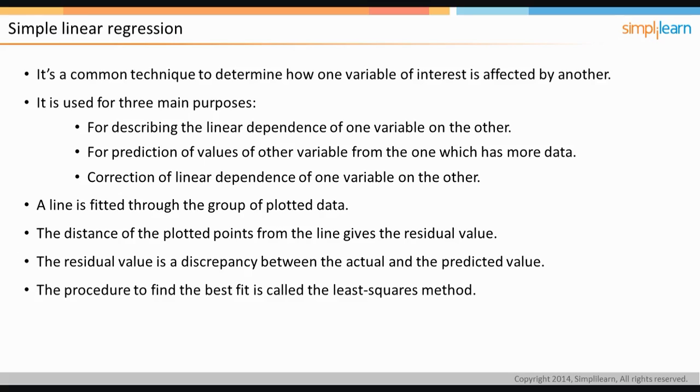The procedure to find the best fitting line for a group of data is called the least squares method. It is based on the principle that the sum of squared errors should be as reduced as possible, so that the regression line has the least error. In the next slide, we will look at a linear regression model.